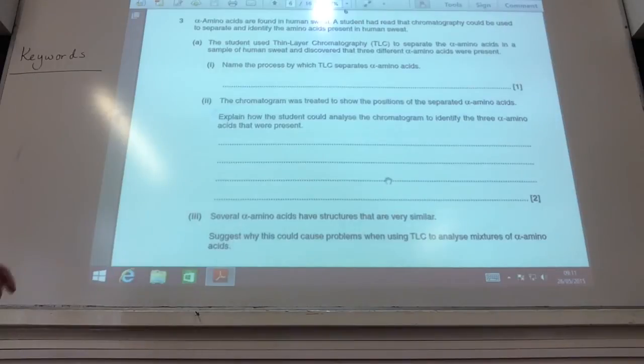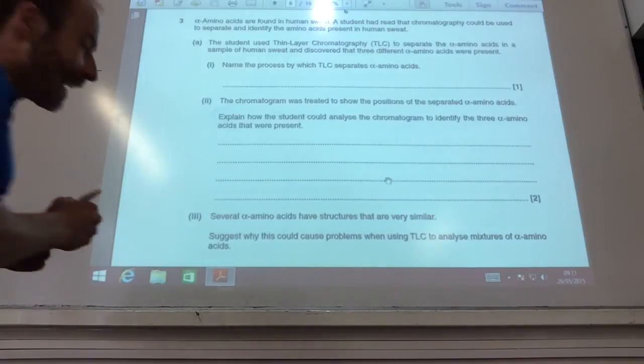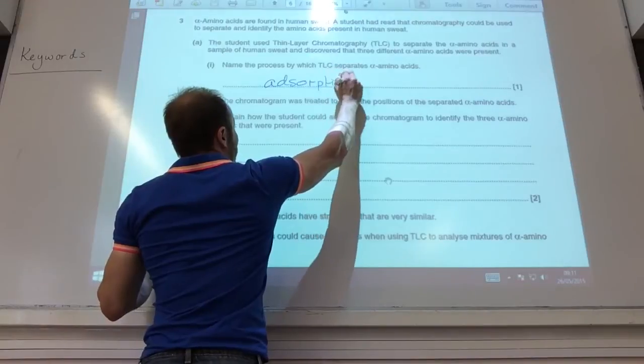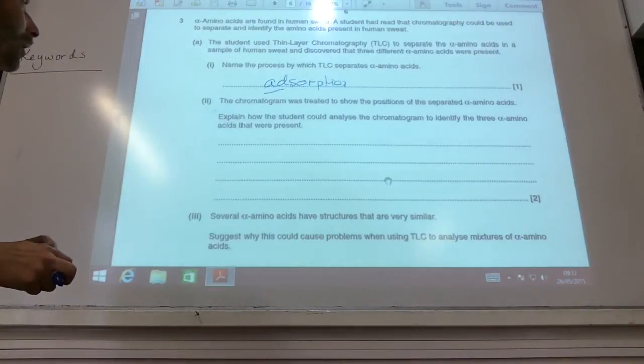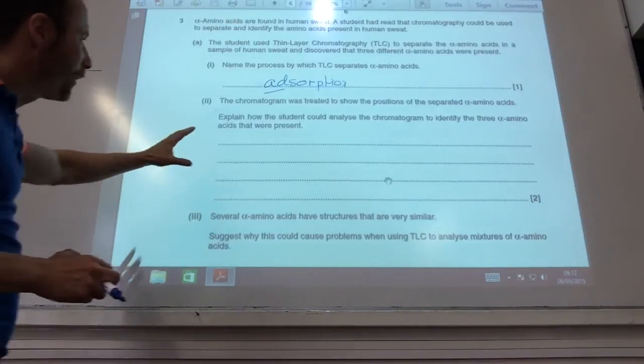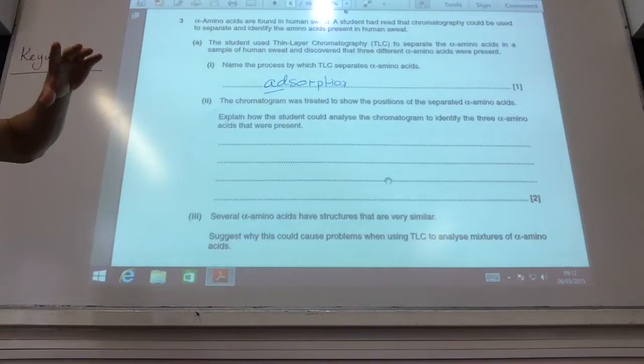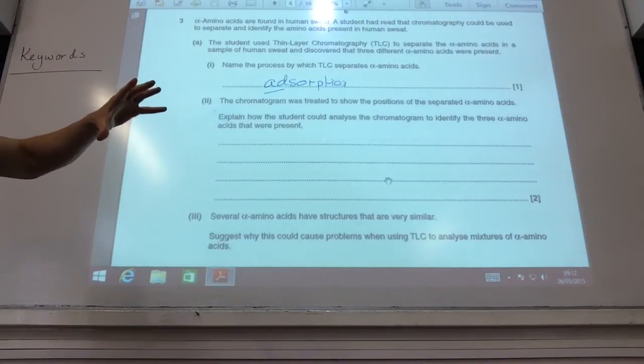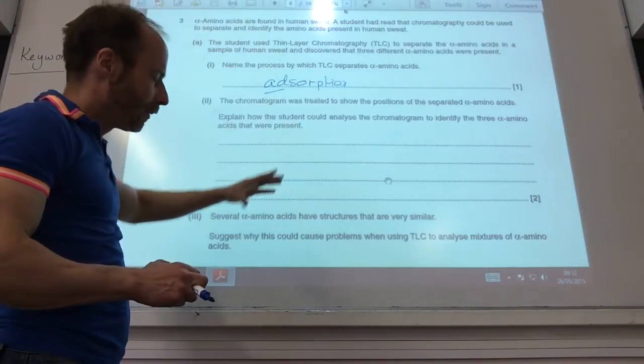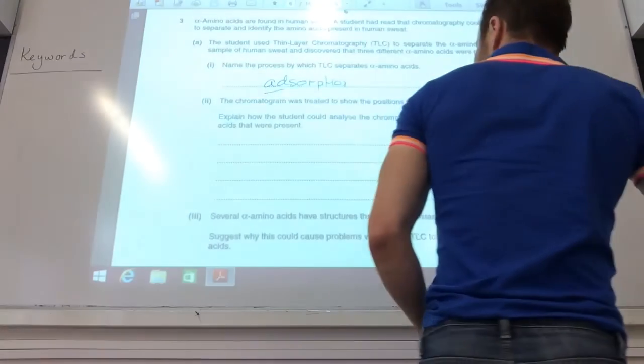Okay, name the process by which alpha amino acids are separated. Going on to TLC, how do we separate? It's adsorption. How is it treated to show different alpha amino acids? Explain how you could analyze the chromatogram to identify the amino acids. Could measure how far each spot travels up the chromatogram relative to the solvent front, and then compare those values with known ones. Calculate the RF value and compare that value with known ones for amino acids.